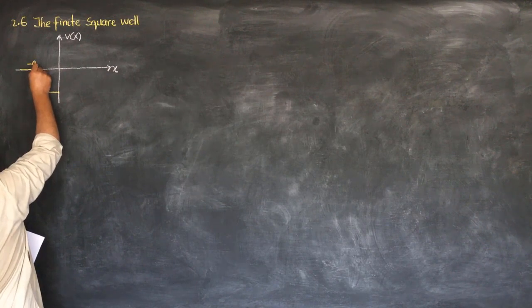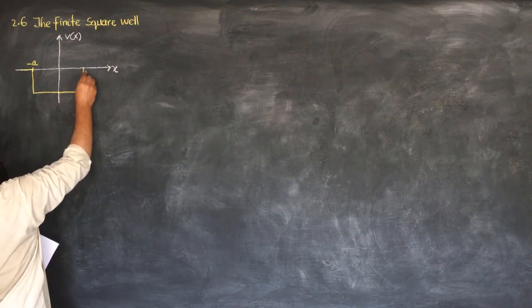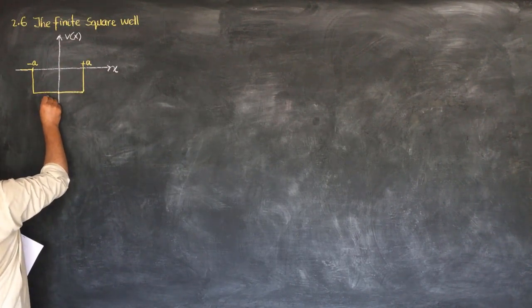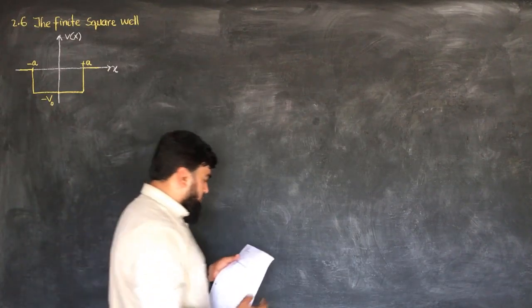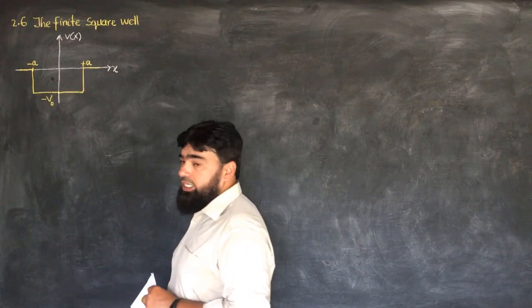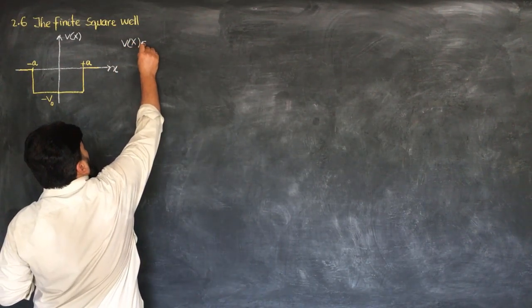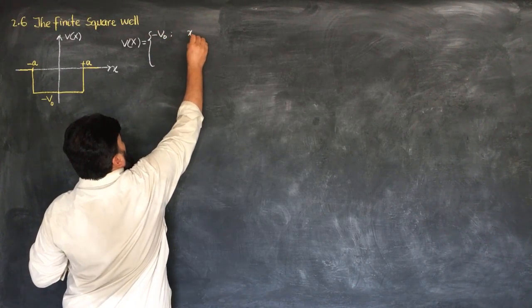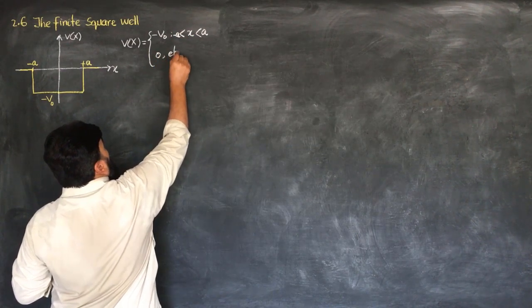If this point is minus a on the x-axis, then we move exactly the same distance plus a from the origin. The value of the potential is minus v-naught, then the potential again becomes 0. So the geometry is: v(x) equals minus v-naught when x is between minus a and plus a, and 0 elsewhere.